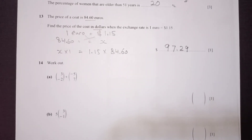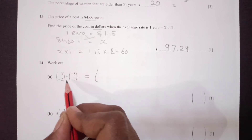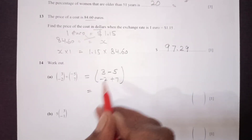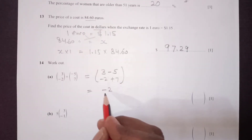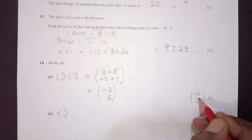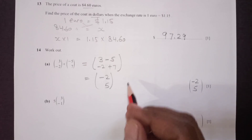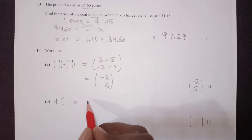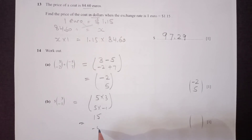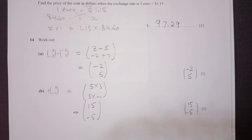Question 14: add the vectors (3, 5) and (−5, −2) — wait, adding (3, −5) and (−5, 7) gives (3 + (−5), −5 + ... ) — the components give (−2, 5), so the answer is (−2, 5). For the next part, multiply the vector (3, −1) by 5: 5×3 = 15 and 5×(−1) = −5, giving the answer (15, −5).